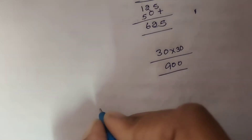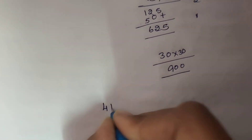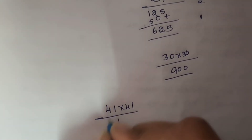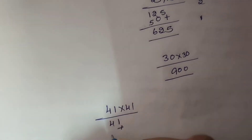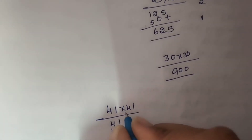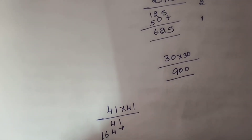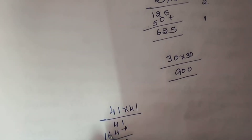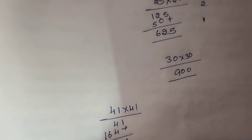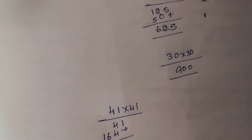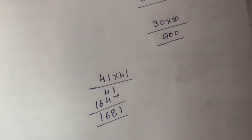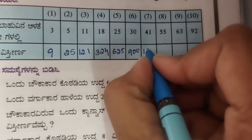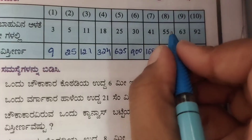For side 41: 41 into 41. 1 one is 1, 1 four is 4. 4 ones are 4, 4 fours are 16, carry 1. 4 plus 4 is 8, carry 1. Result: 1681.